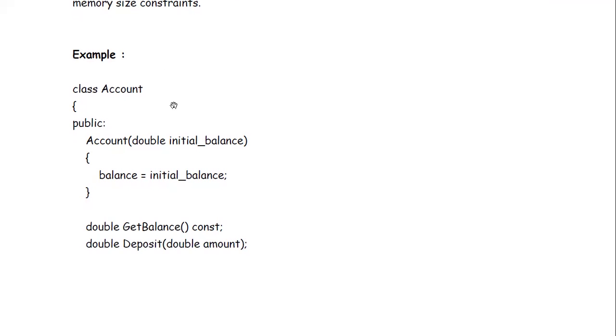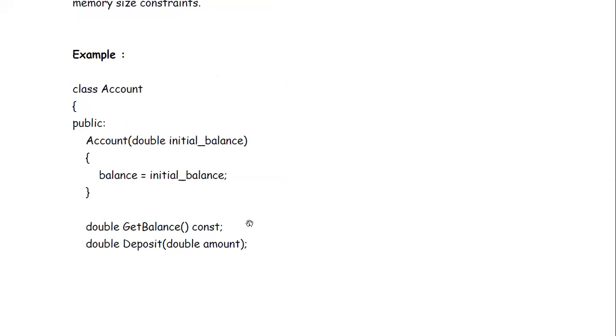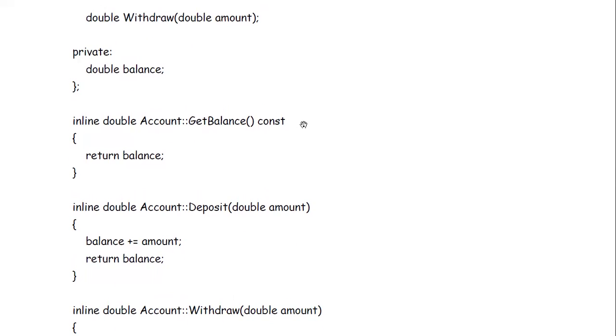Let's take an example of inline function. See this is the class Account. Class we all know in C++, a kind of blueprint from where we instantiate objects. Now inside this class we are using this, I hope you all know about the constructors. Account double initial_balance, balance this variable being assigned a value of this particular parameter initial_balance. Then double get_balance constant, then double deposit double amount, then double withdraw double amount. These are the data types we are using here as double. And under private we have defined a variable balance.